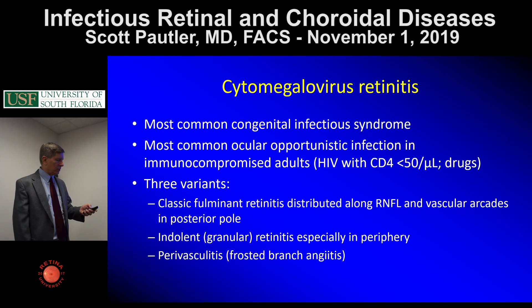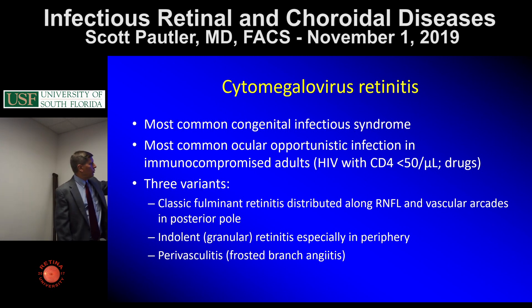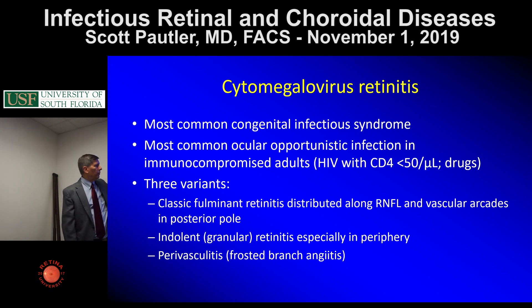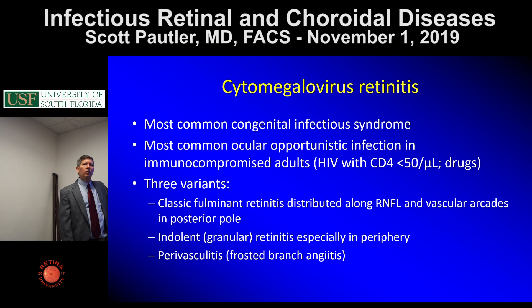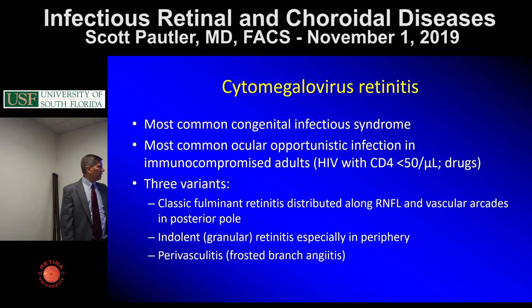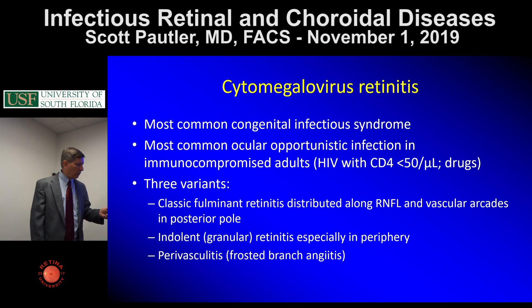We don't see CMV as much now as we did years ago. There are three variants helpful to identify: classic fulminant, seen in people with really poor immune systems; indolent retinitis in those with less severe immune dysfunction; and a fairly unusual perivasculitis that you might see in young people who get CMV and are otherwise healthy.